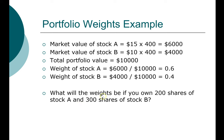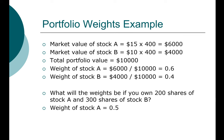Go ahead and try on your own: what happens if you own only 200 shares of Stock A and 300 shares of Stock B — what would the weights be? Pause the video and do the calculation. Welcome back. Did you get 50% in Stock A and 50% in Stock B? Congratulations. We will end this video here. In the next video, we're going to look at portfolio risk in detail.